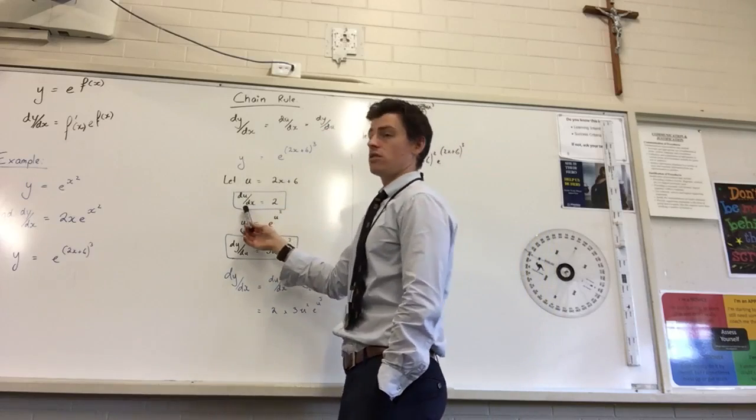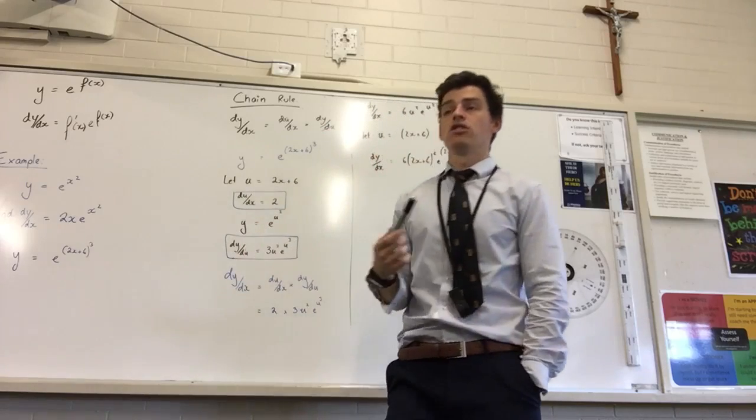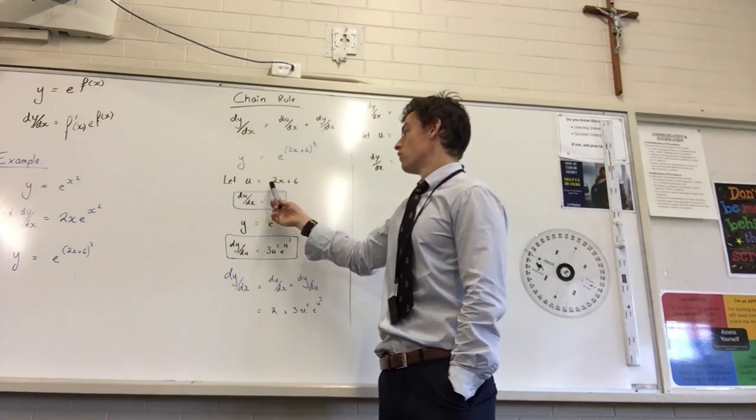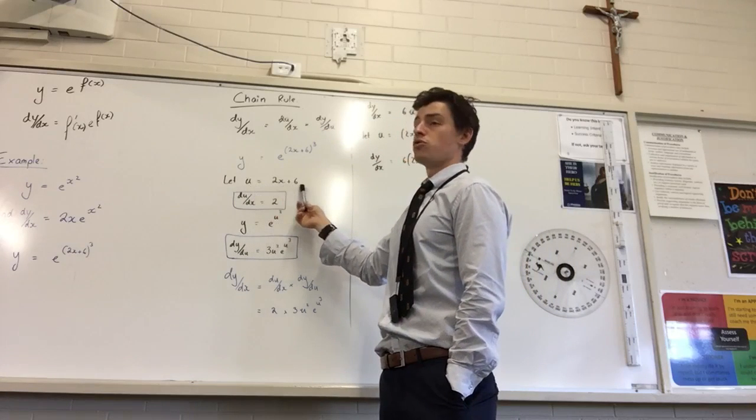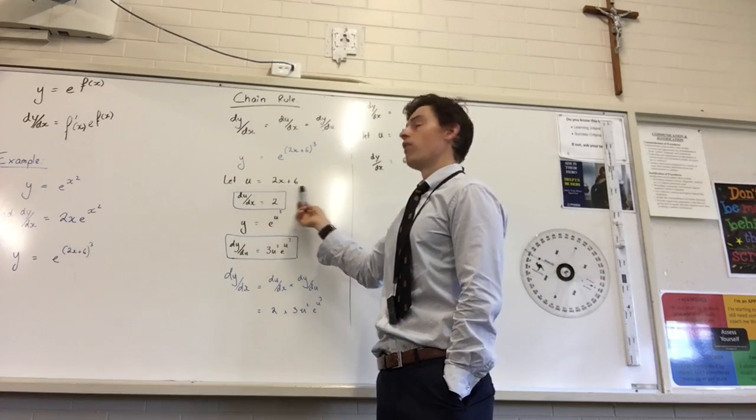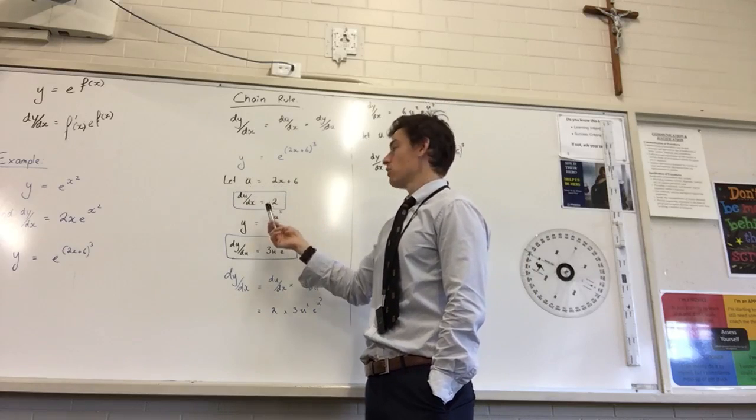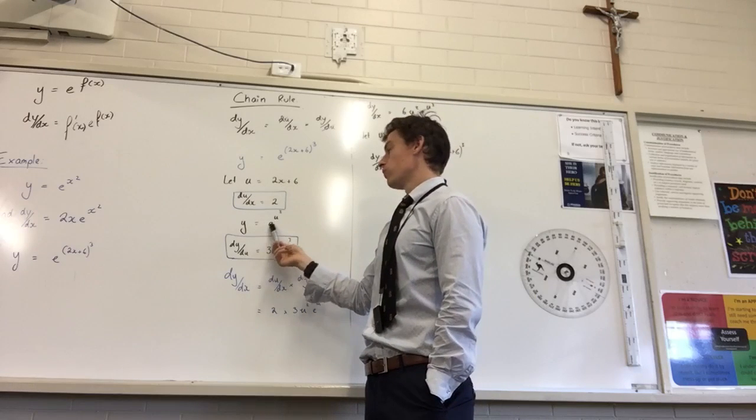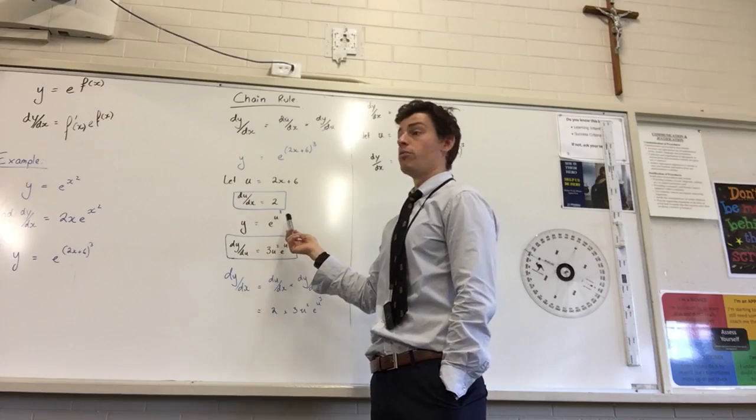Then I'm saying, well du dx times dy du will leave me with dy dx because the du's will cancel. So now all I need is du dx. So du dx is just saying, what's the derivative of u with respect to x? So derive that. Can I derive that? I get 2. Can I derive y equals e to the u cubed? U to the power of 3.